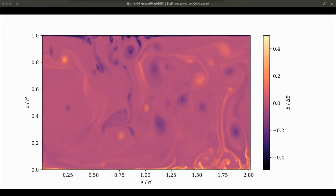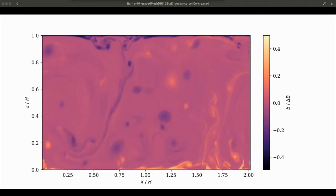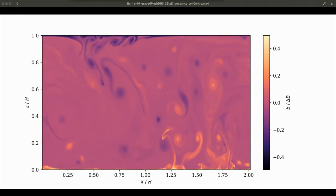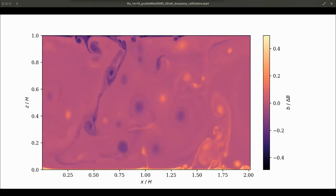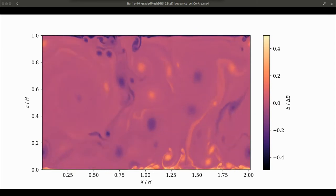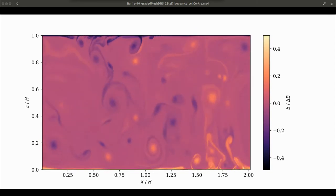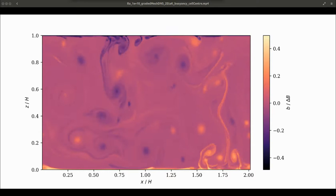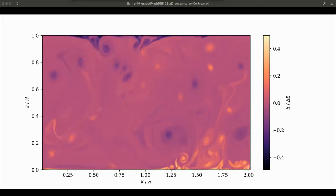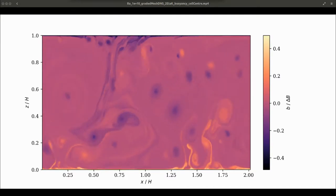This animation shows the buoyancy of Rayleigh-Benard convection with a Rayleigh number of 10 to the power 10. We can see that, although positively buoyant air rises and negatively buoyant air sinks, there is not a one-to-one correspondence. We are conditionally averaging based on W, and so some neutrally or negatively buoyant air will be included in the rising fluid.